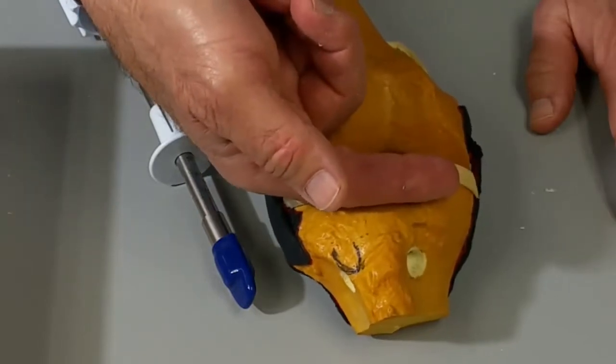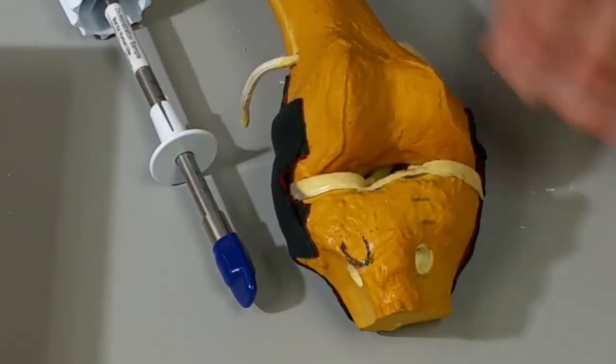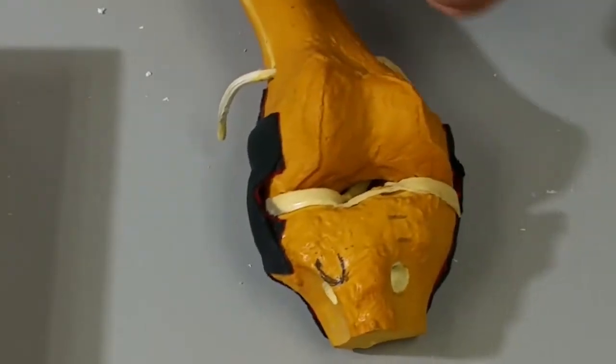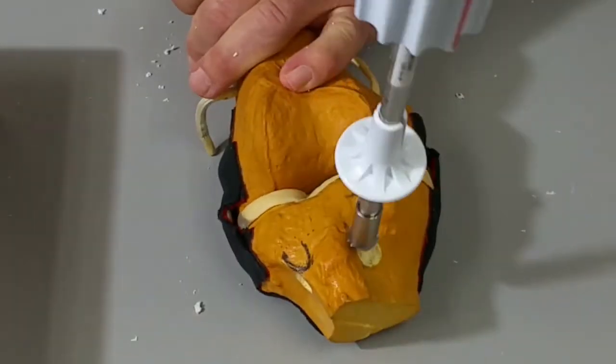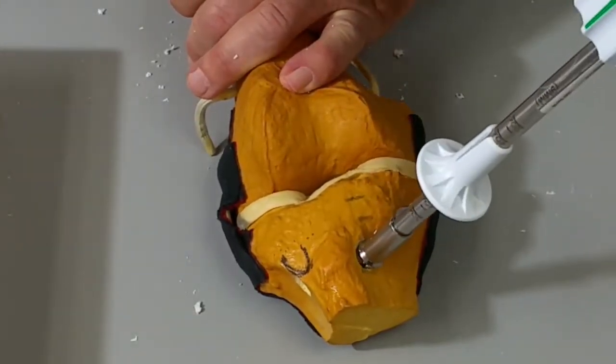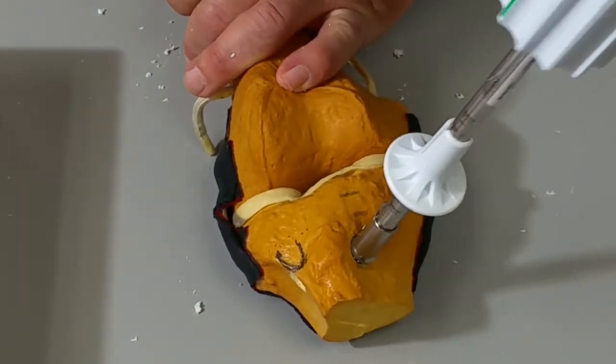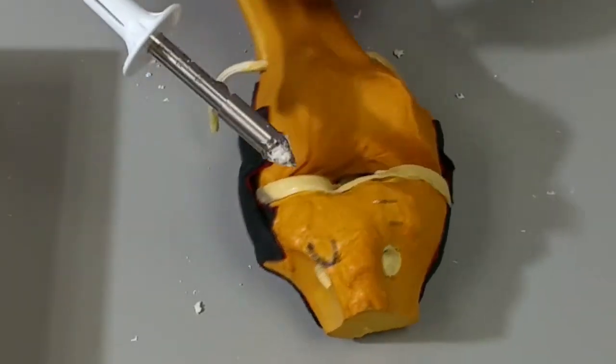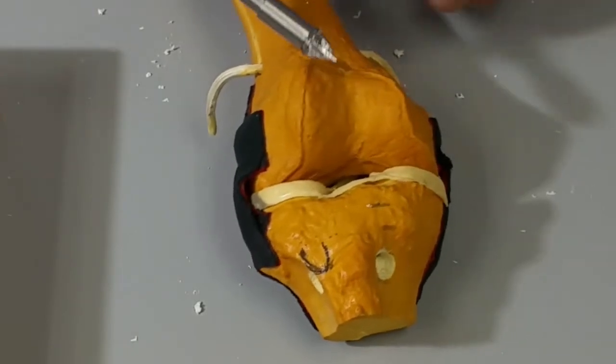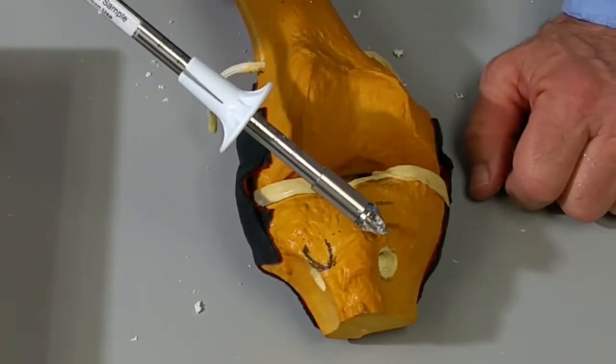It is about one to one and a half finger breaths below the palpable joint line. And you can see that if the trocar tip is placed in this area, you'll be able to access quite a bit of cancellous bone.